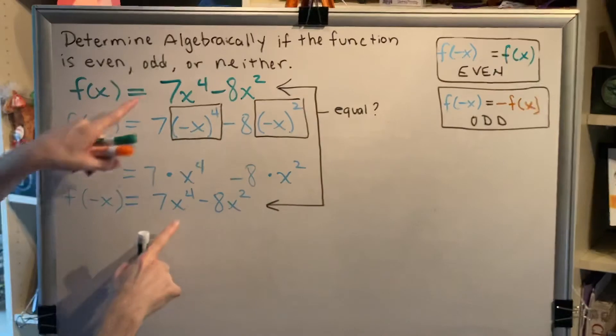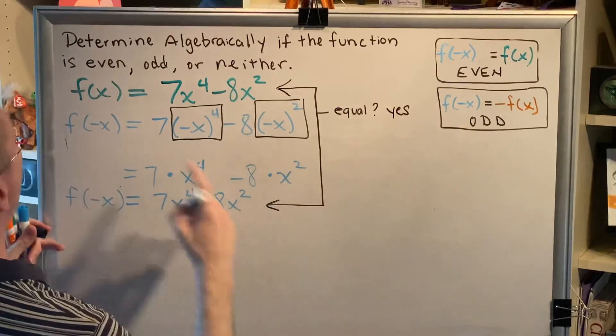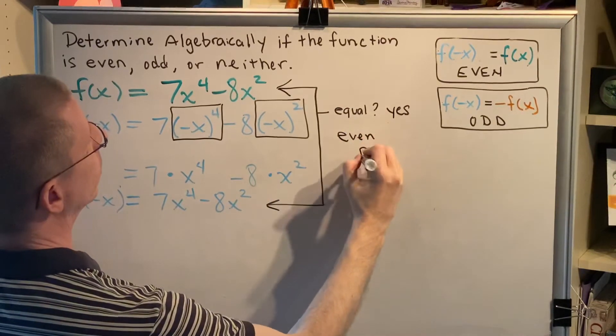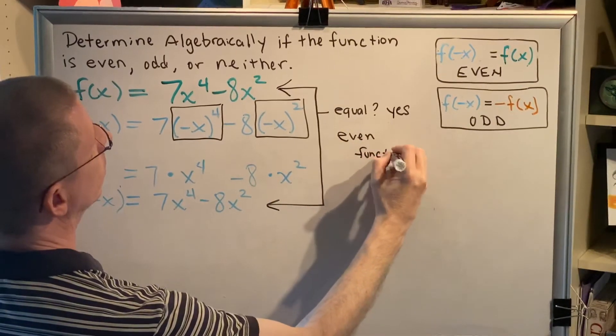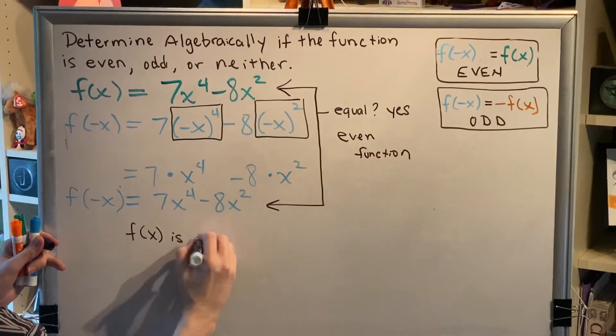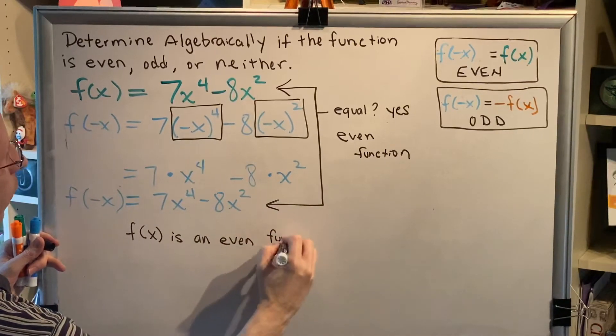Well, the answer is yes, these are the same. And so, that makes this an even function. And we can write our conclusion, f of x is an even function.